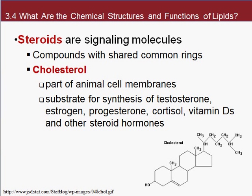Another group of lipids are the steroids. Steroids are signaling molecules, and this class of lipids all share a common ring structure. This includes cholesterol, which is an important part of cell membranes and is a substrate for creating hormones like testosterone and estrogen, as well as vitamins and other steroid hormones. Here's a picture of cholesterol — you can see the backbone of one, two, three, four rings, and then you can modify the parts that stick out to get the different types of molecules.